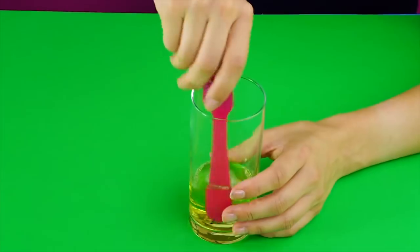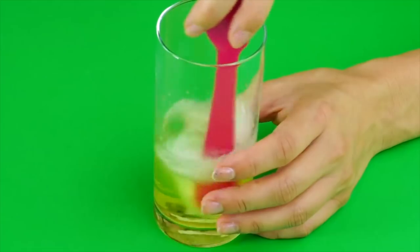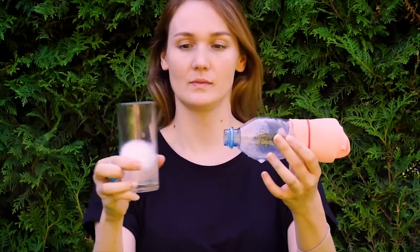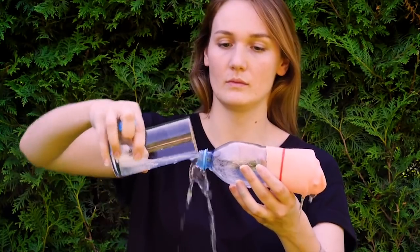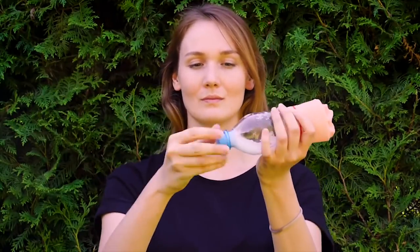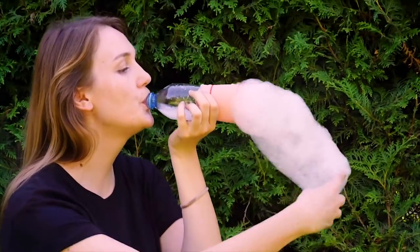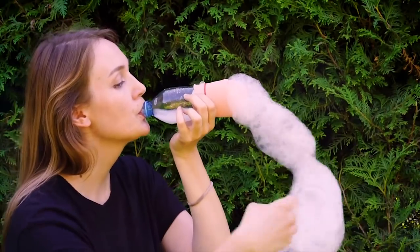Once it's all mixed together, take your contraption outside and pour some of the bubble solution inside the bottle. Close the cap and give it a nice healthy shake. Now uncap your bottle, wrap your mouth around the opening of the bottle, and blow. Look at these crazy long bubble snakes.